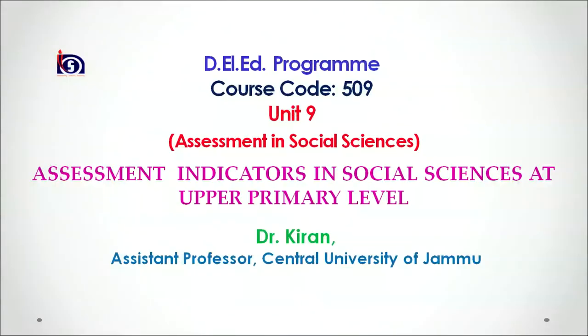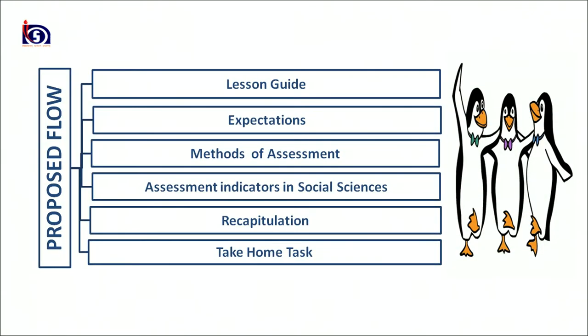Hello learners, I welcome you all in yet another video lesson of DLAD program, course code 509, unit 9: Assessment in Social Sciences, on assessment indicators in social science at upper primary level. Let me share with you the proposed flow of the lesson. In the beginning I would share the lesson guide, then the learning objectives, followed by methods of assessment in social sciences, assessment indicators, recapitulation, and a take-home task.